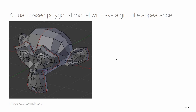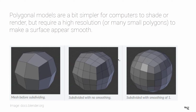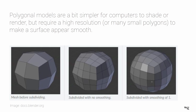A quad-based polygon model has a grid-like appearance where you can usually follow lines all the way around the model, creating what are called loops. Polygonal models are simpler for computers to shade or render, but they require high resolution — many small polygons — to make a surface appear smooth. By subdividing and smoothing, we add more geometry to create a smoother look. Polygonal modeling software includes 3ds Max, Maya, Blender, and Cinema 4D, though some of these also have limited NURBS features.